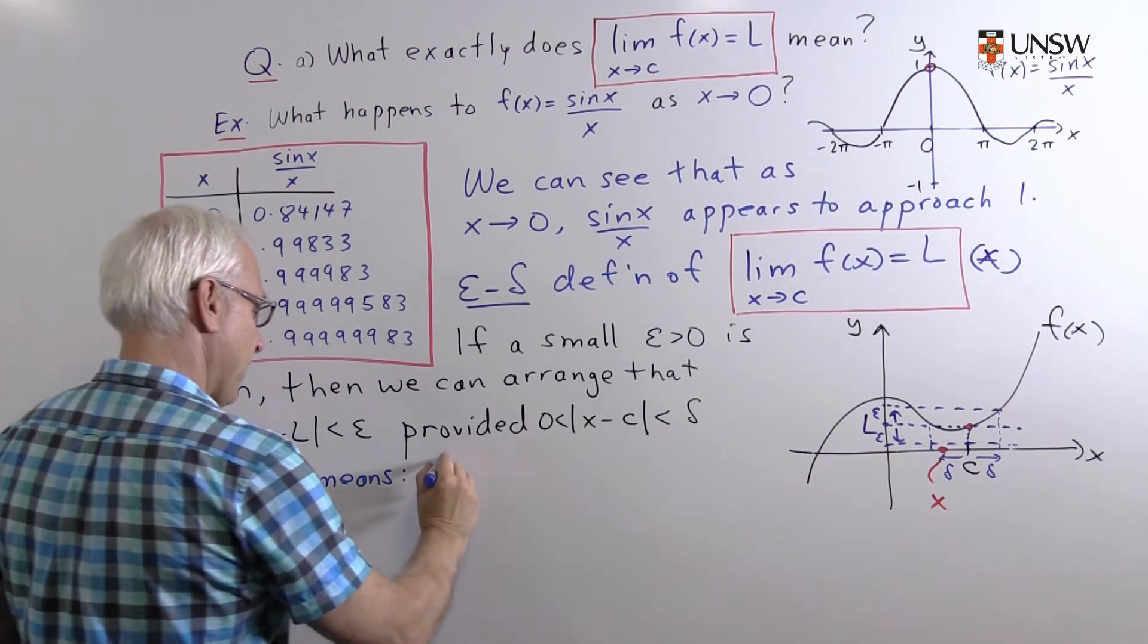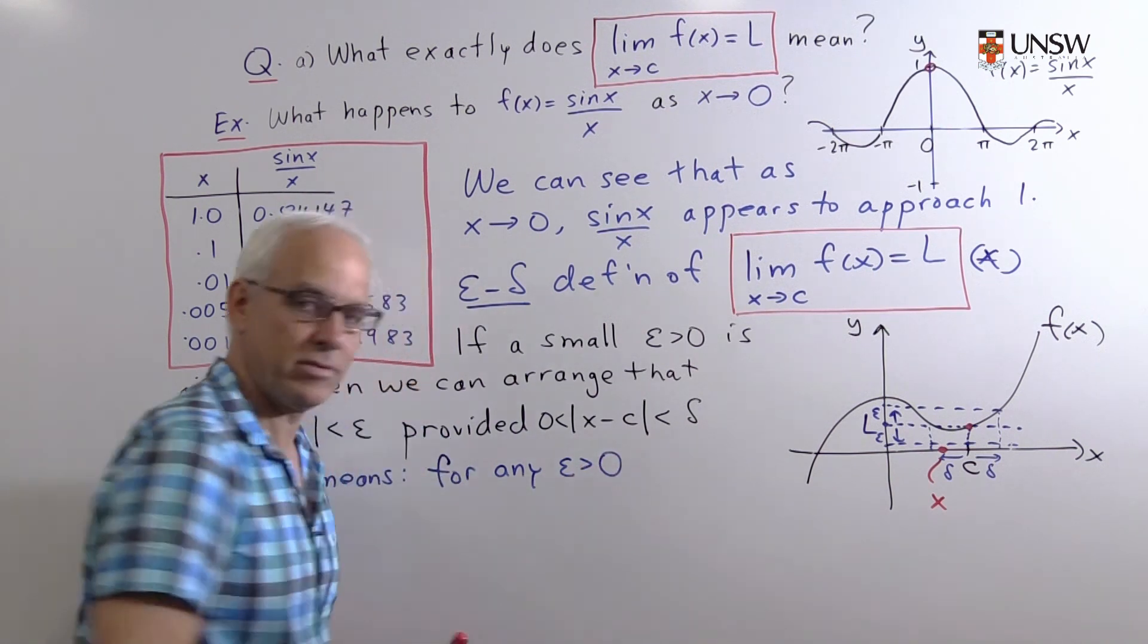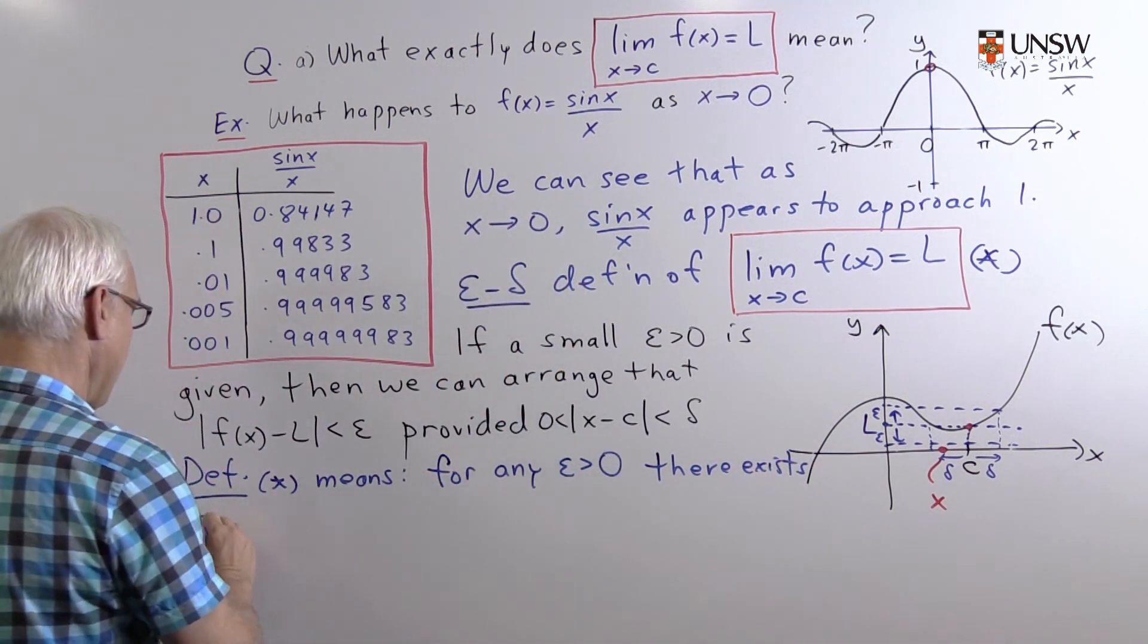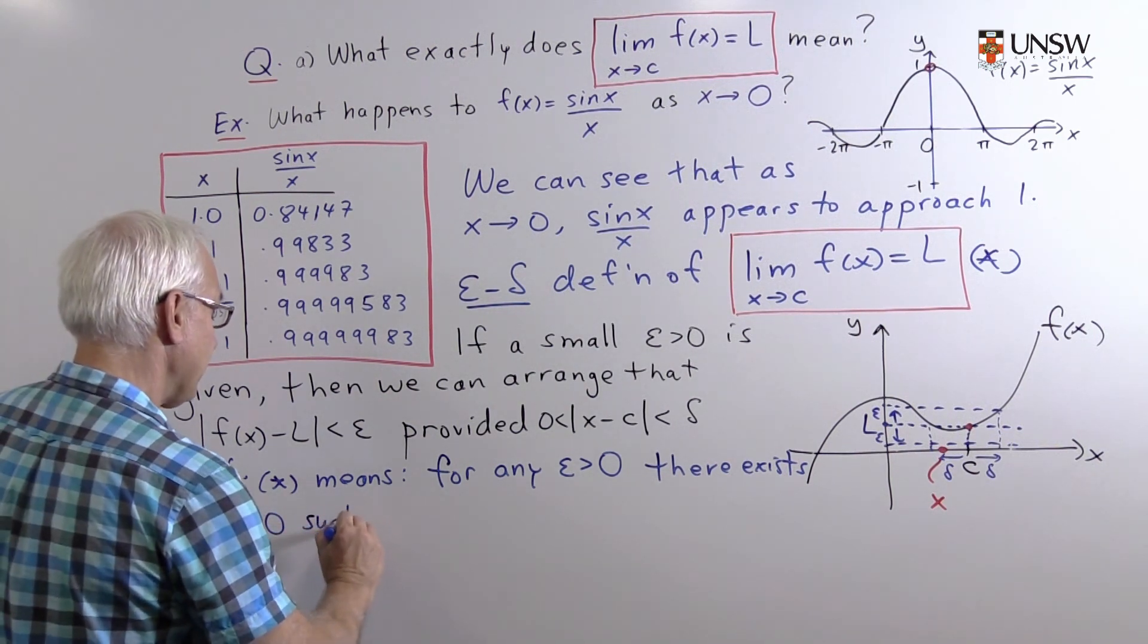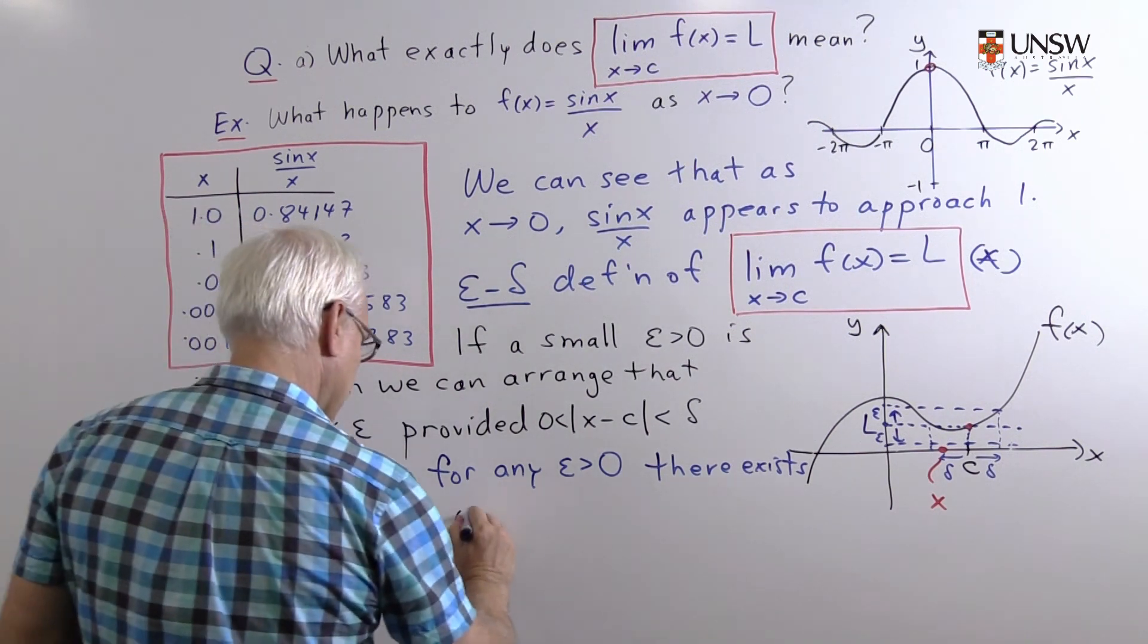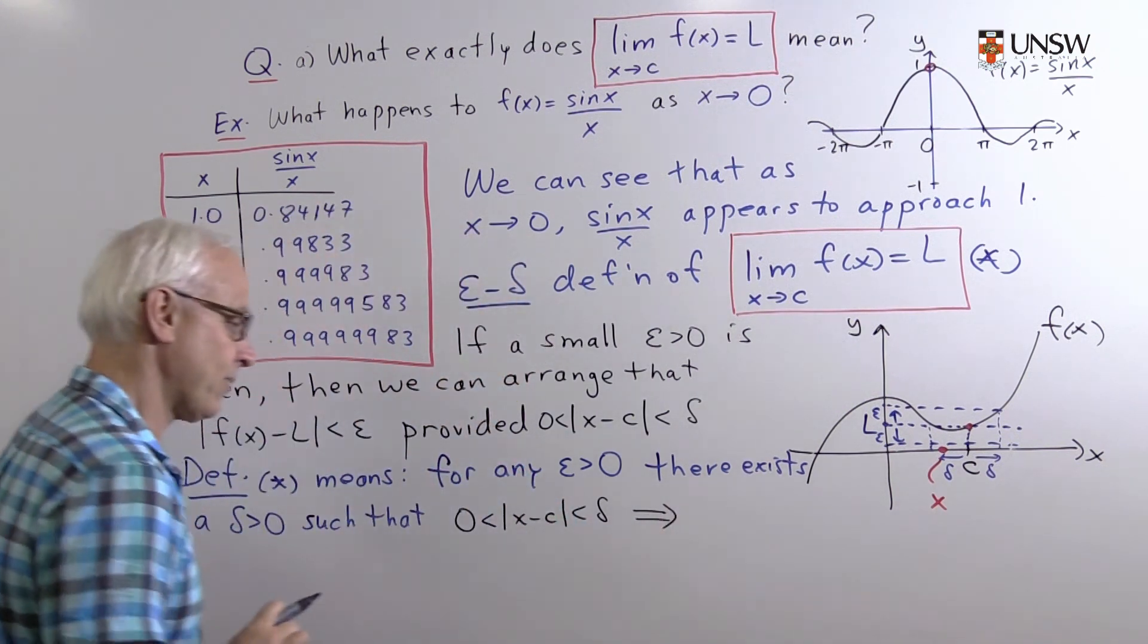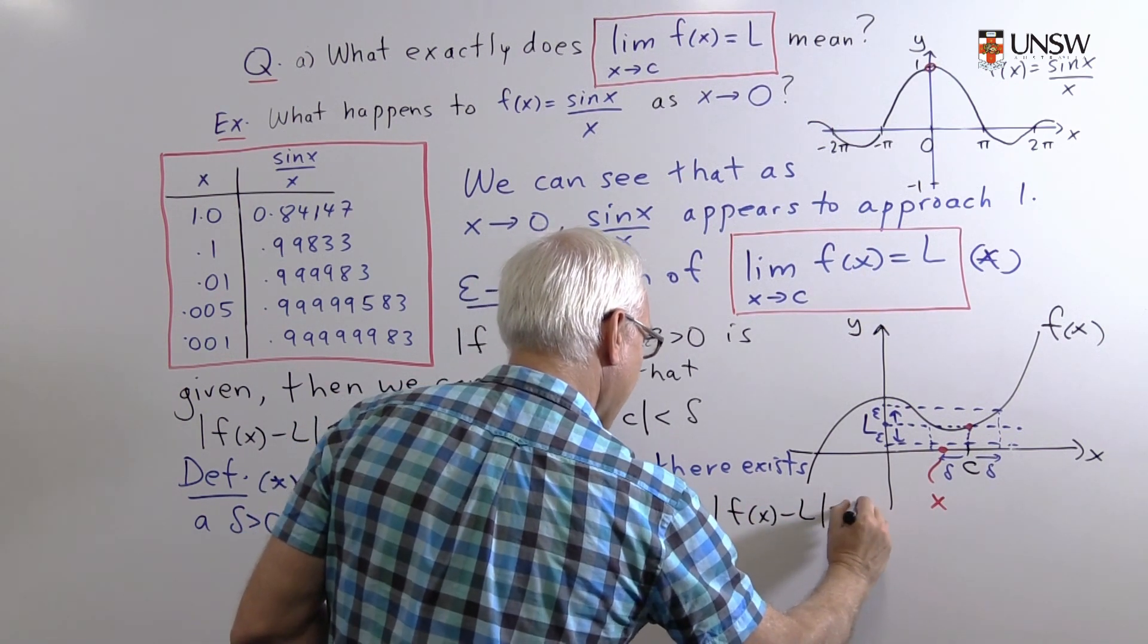Star means the following: that for any epsilon greater than zero, there exists a number delta greater than zero such that zero is less than |x minus c| is less than delta implies that |f(x) minus L| is less than epsilon.